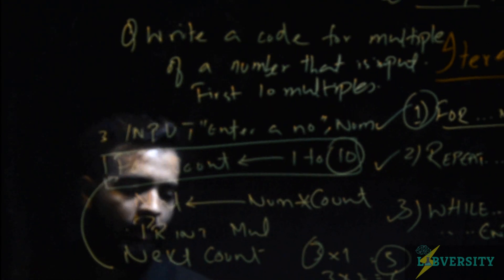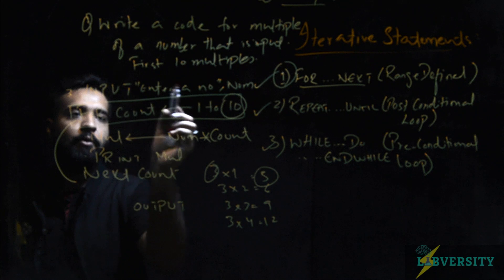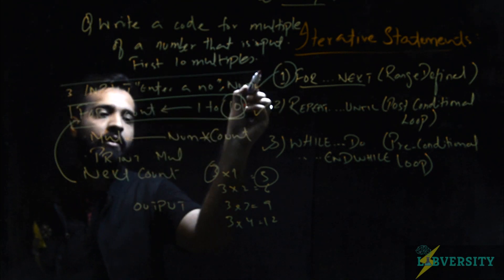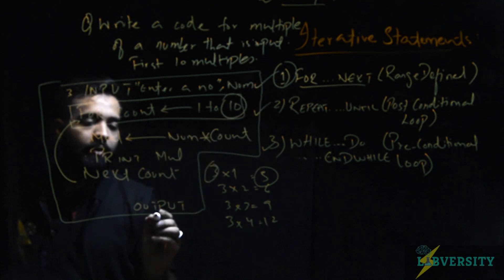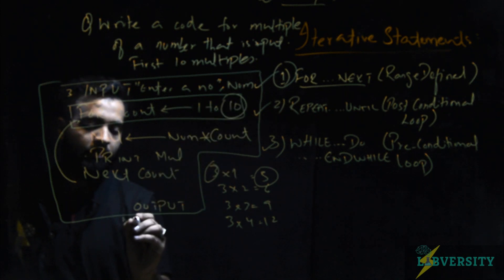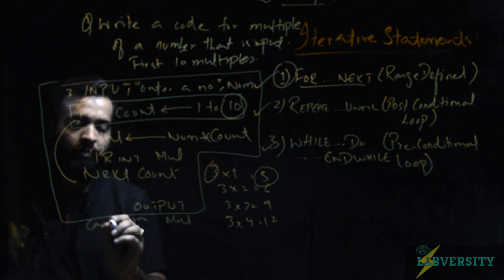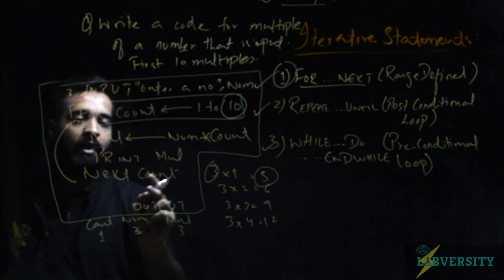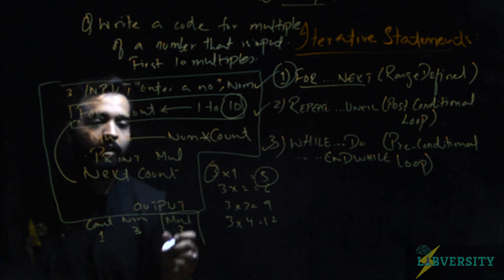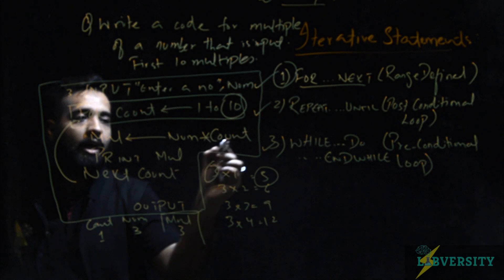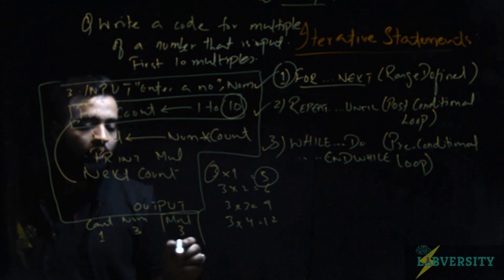Let's trace this code and see what our output will be. First we input a number when we started the program. The program starts from here. We entered a number that was 3. So the count became 1 and 3 ones are 3, and then it prints the multiple. This will be printed and then it went again. Now count became 2 and num, because it is outside the loop, this statement is outside the loop, it will not repeat itself.